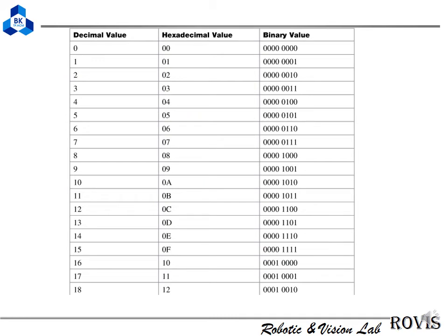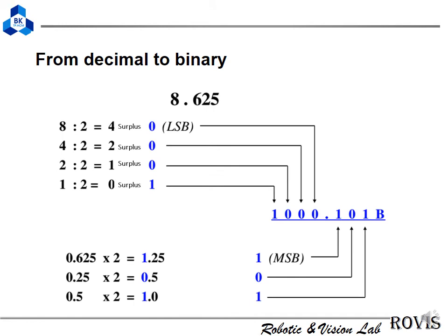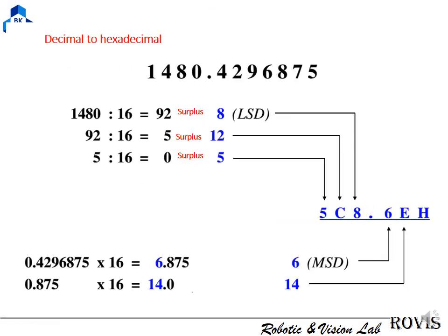This is the example of the changing from decimal to hexa and binary. This is the method to change from decimal to binary: just divide by two. And to hexa is similar: divide by 16.